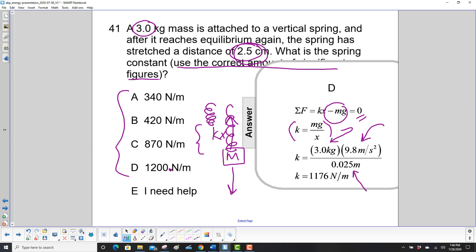What is this 0.025 business? Well, this is 2.5 centimeters. We need it in meters, so you move the decimal place over two places and you get 0.025. When you do the math, you get k equals 1176 newtons per meter.